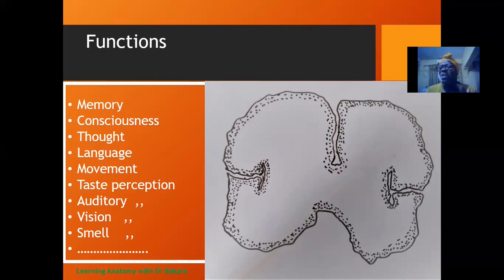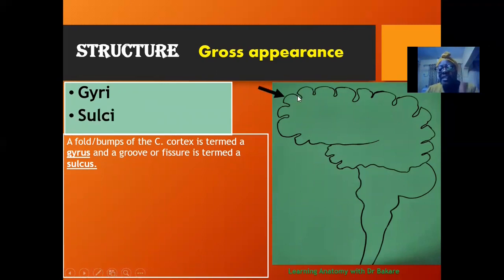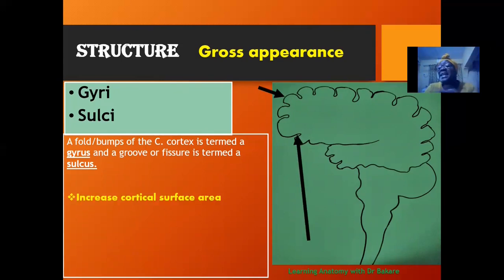This will take us to the structure of the cortex in terms of gross morphology — how it is able to execute these functions. The cerebral cortex is not a plain pattern presentation; it is seen with depressions and elevations. We have the gyri, which are elevations seen across the entire surface of the cerebral cortex. After the elevation, we have a depression called the sulcus. These exist to increase the surface area of the cerebral cortex.